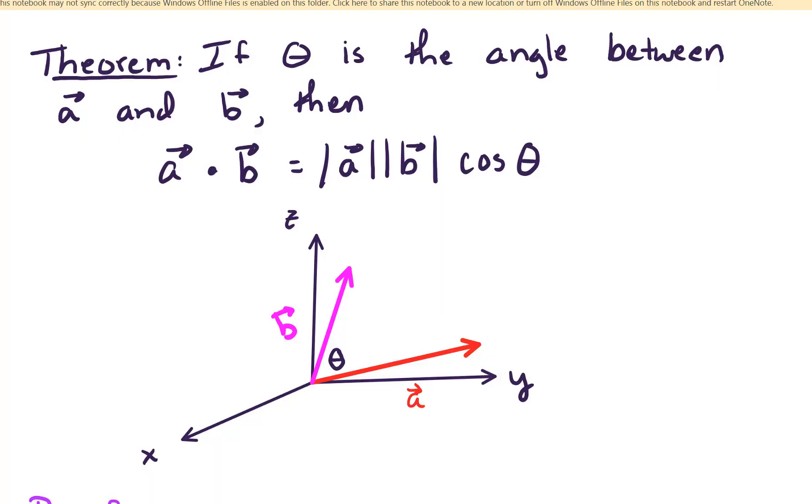Hello, in this video we're going to prove the theorem which connects the dot product to the angle between two vectors. So we've got vectors a and b, and in our theorem we say that a dot b equals the length of a times the length of b times cosine of theta.